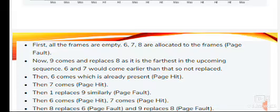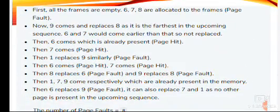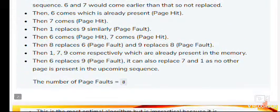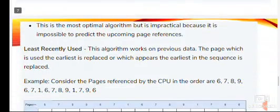Now 9 comes and replaces 8, as 8 is the furthest in the upcoming sequence — 6 and 7 would come earlier, so they are not replaced. Then 6 comes — it is already present, so it is a page hit. Then 7 comes — also a page hit. Then 1 replaces 9, which is a page fault. Then 6 and 7 come — both are page hits. Then 8 replaces 6 — page fault. 9 replaces 8 — page fault. Then 1, 7, 9 come — already present in memory. Then 6 replaces 9 — page fault. The total number of page faults is equal to 8. This is the most optimal algorithm, but it is impractical because it is impossible to predict upcoming page references.